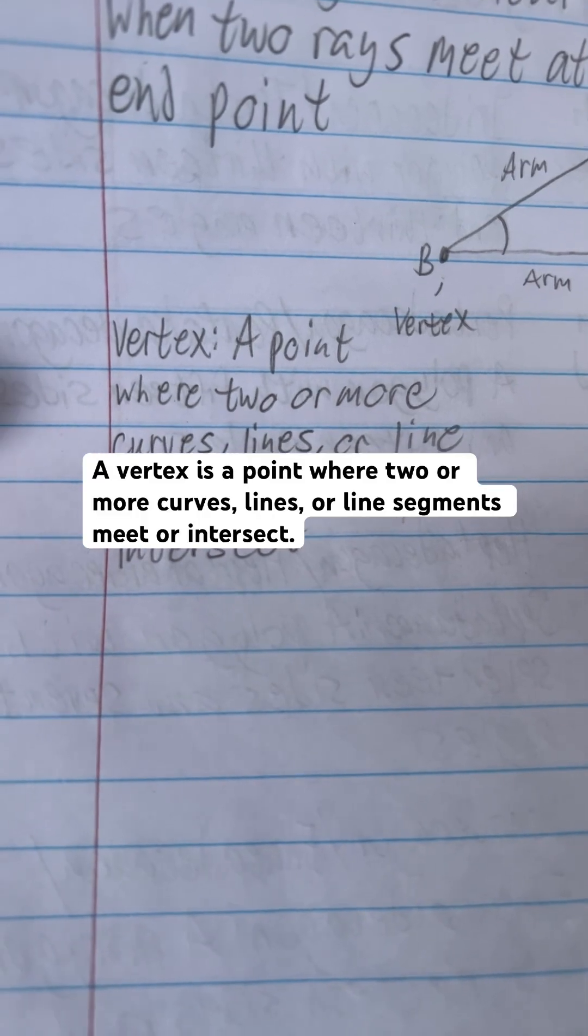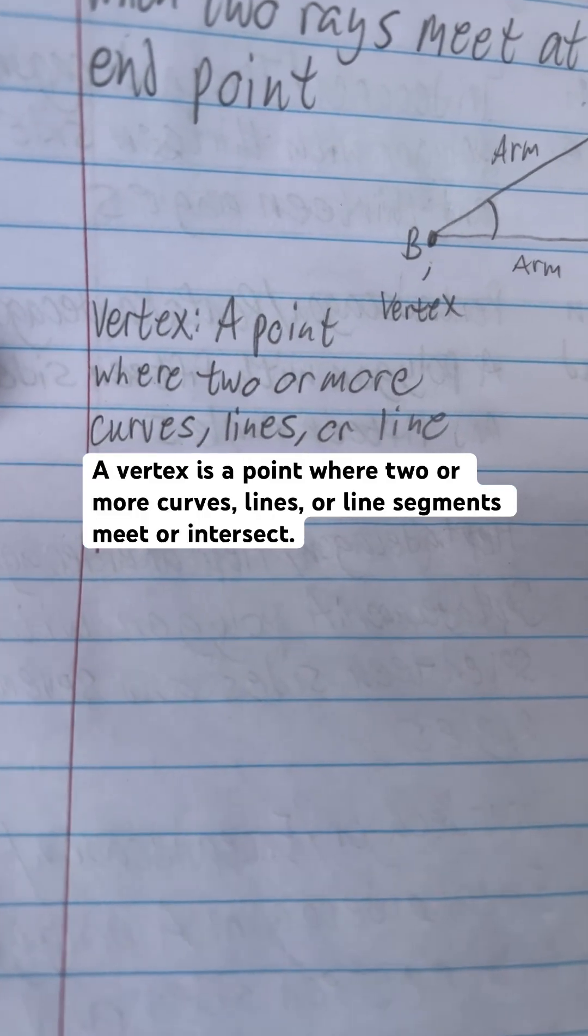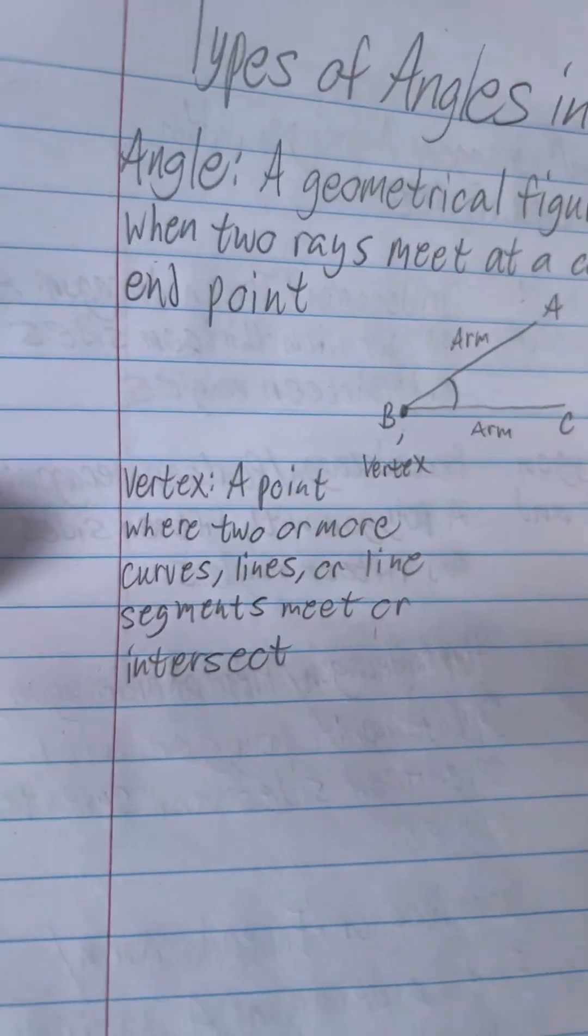A vertex is a point where two or more curves, lines, or line segments meet or intersect. So it's basically the endpoint I was talking about.